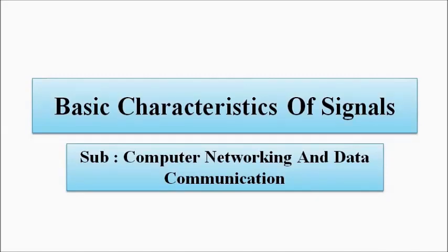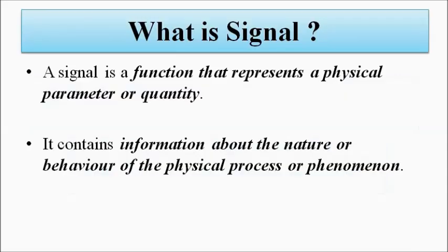Hello friends, welcome to Engineering Tutorial. So far in our physical layer discussion, we have covered basic concepts related to physical layer, signals from the point of view of computer networking and data communication. In this video we are going to again discuss something related to signals — the basic characteristics and parameters related to signals. We have already covered the basic definition of a signal, but let us refresh it quickly. A signal is basically any function that represents the behavior or nature of a physical parameter or process.